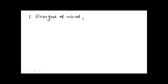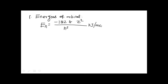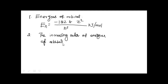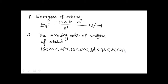Last class we discussed: First, energies of orbitals — the Bohr radius formula: En = −1312.8 Z² / n² kilojoules per mole. Second, the increasing order of energies of orbitals: 1s < 2s < 2p < 3s < 3p < 3d < 4s < 4p, and so on up to 7p.